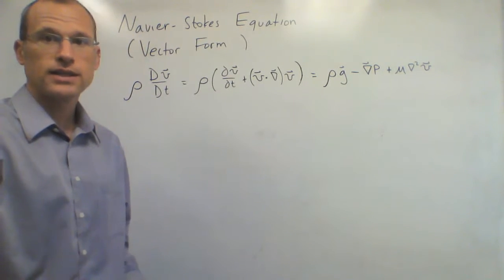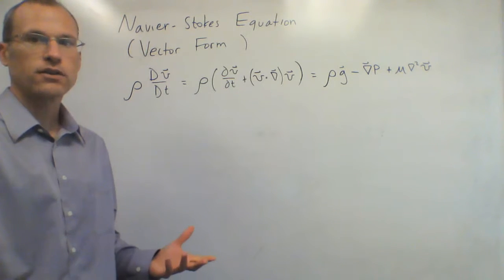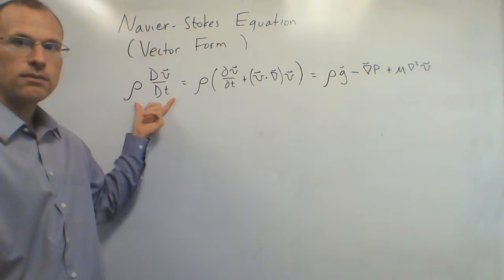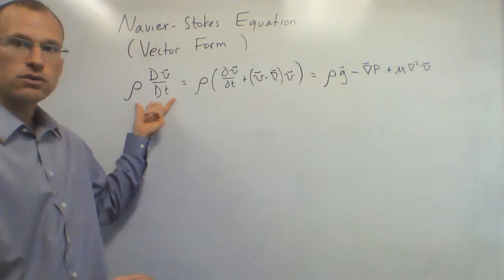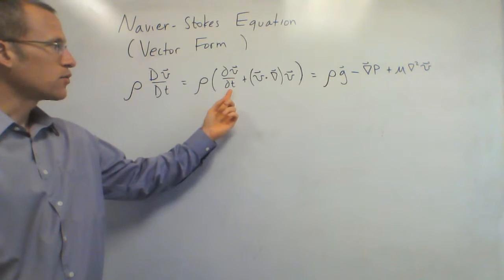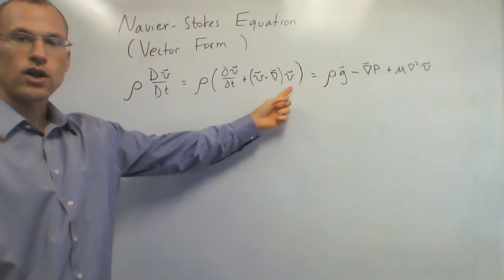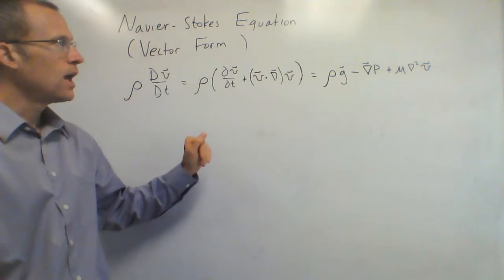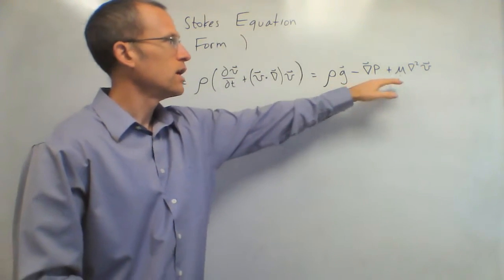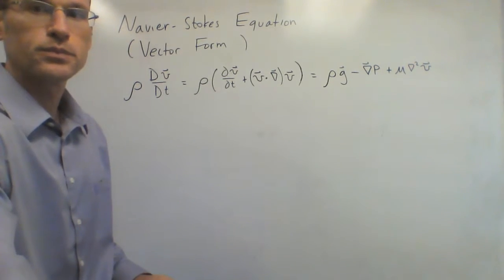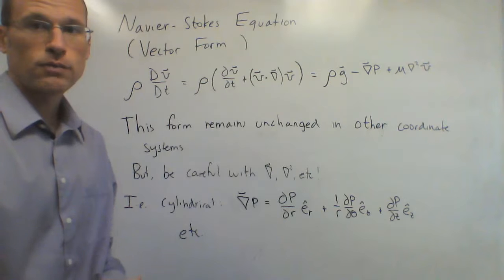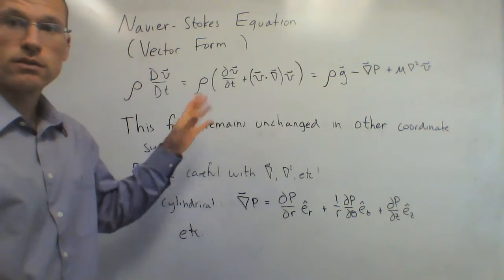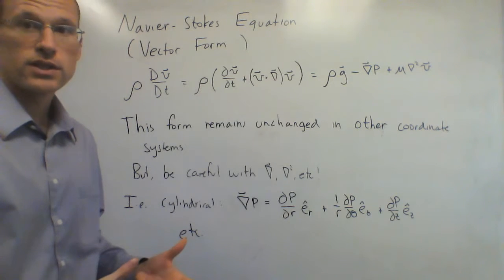A shorter way to write those equations is in vector form. Instead of three components, we can write them all as a single vector equation. A shorthand is the capital D/Dt notation, where the substantial derivative is defined as the time derivative plus v dotted with the gradient. So DV/Dt represents that combined term. The right-hand side has gravitational force, gradient of pressure, and mu times del-squared V. The nice thing about this vector form is that it works for any coordinate system, reducing to the three component equations we saw in Cartesian coordinates.